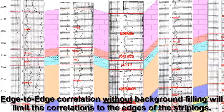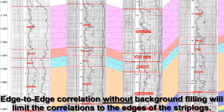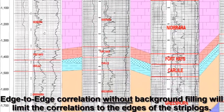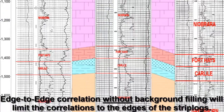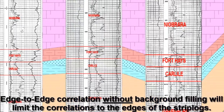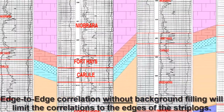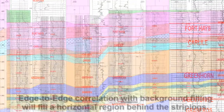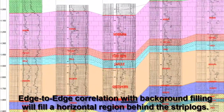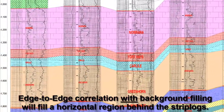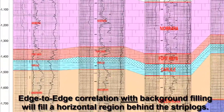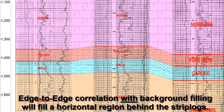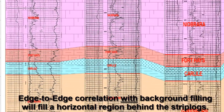Edge-to-edge correlation without background filling will limit the correlations to the edges of the strip logs. Edge-to-edge correlation with background filling will fill a horizontal region behind the strip logs.